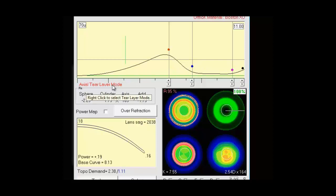We have two tier layer modes we can design with. Axial tier layer mode where we can right click and toggle to tangential mode. I'm going to switch back to axial here. You'll notice there are hash marks underneath here. That's a ruler. Each mark represents one millimeter from the center of the lens.